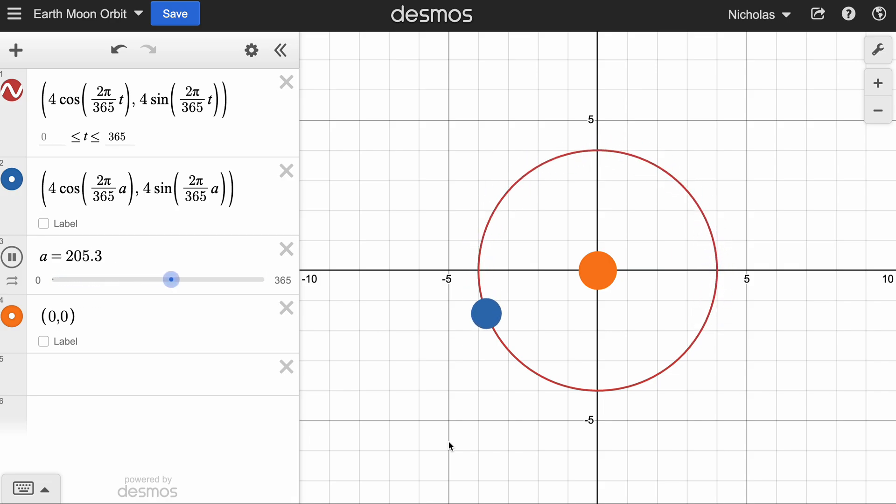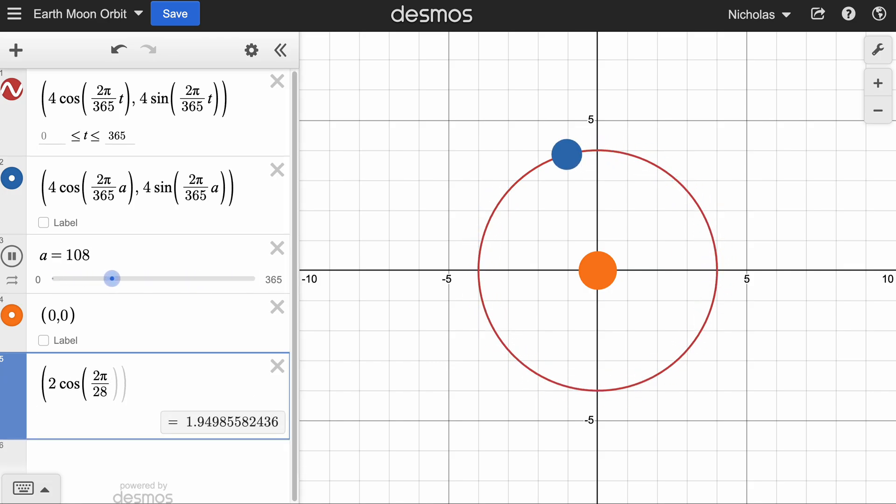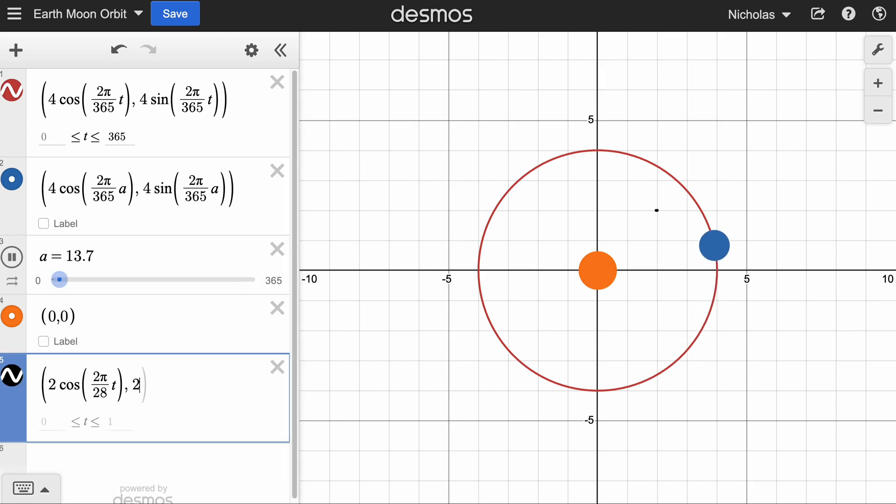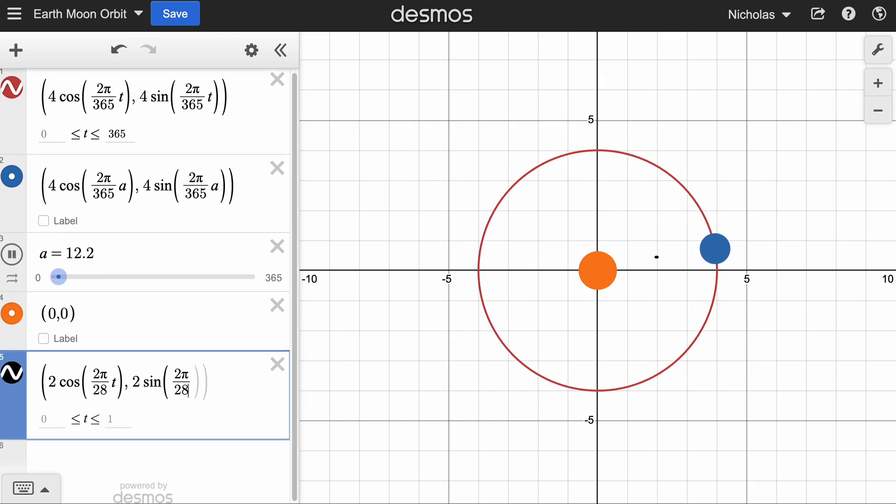Now we'd like the Moon to be going around the Earth. So we said that the Moon could be modeled by taking the radius, let's say the radius from Moon to Earth, let's pretend it's 2, whatever these units are, cosine of, now it takes about 28 days, so we'll do 2 pi over 28 t. And then we'll do 2 sine of 2 pi over 28 t. And so if it takes 28 days, there's our Moon's orbit.